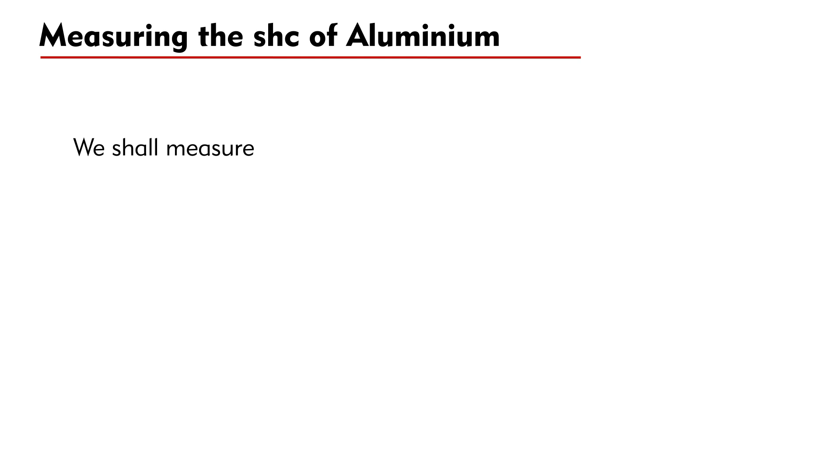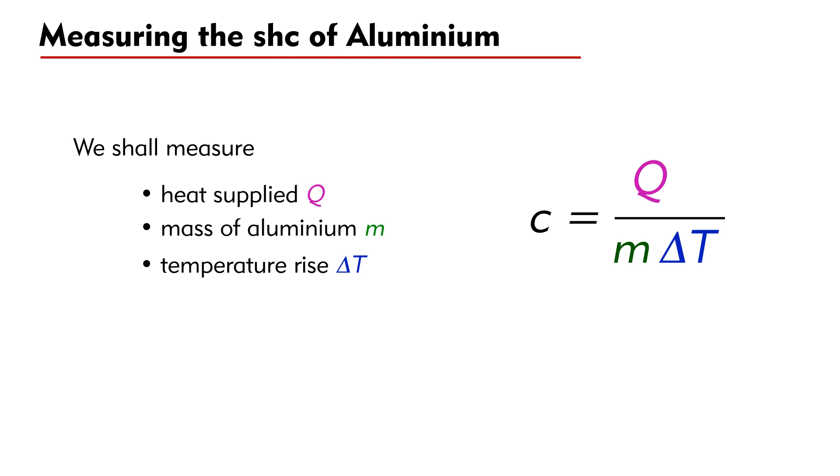Again, we shall measure three quantities: heat supply Q, mass of aluminum m, and temperature change ΔT. Then we shall apply the formula c = Q/(m·ΔT) to calculate the required specific heat capacity.